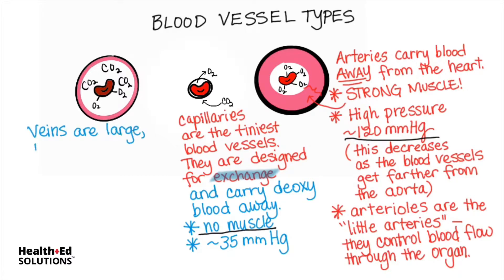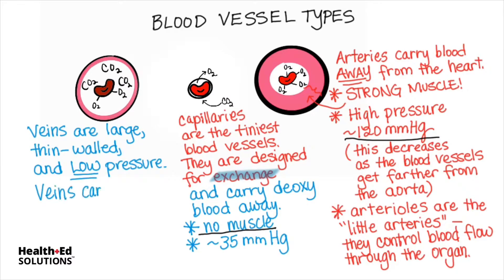Veins tend to be the biggest in diameter. They're large, but their walls are thin, and they're under very low pressure. Veins carry blood back to the heart. They're so low pressure — we're talking 10 to 15 millimeters of mercury, sometimes less than that — that they require valves in them to keep the blood from falling backwards down towards your feet.